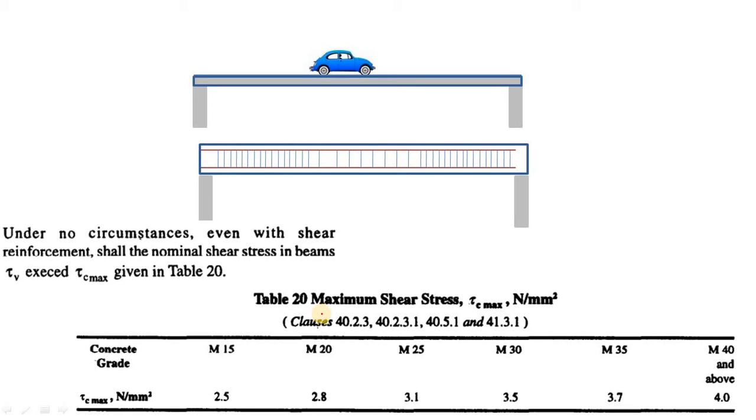and during design for shear reinforcement, you must have encountered a term that is maximum shear stress or Tau C max. In case of IS 456-2000, you have encountered this table 20, where it is mentioned that for different grade of concrete, there is a maximum limit of Tau C max.